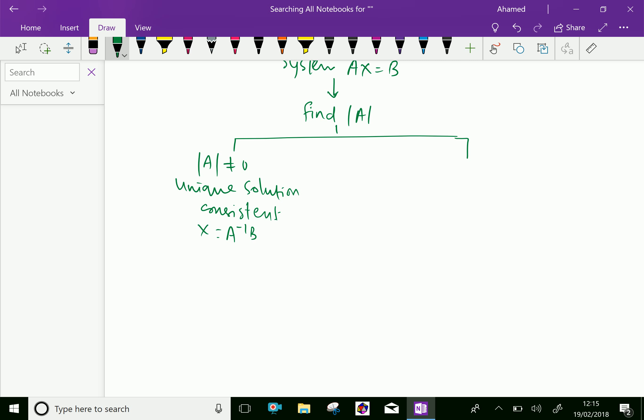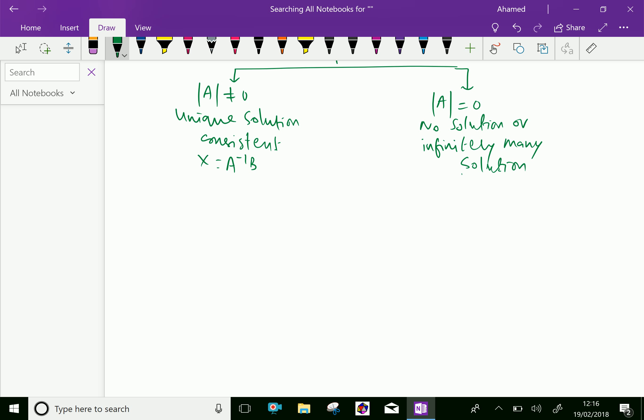The second case: determinant value is equal to zero. Therefore, we can say there is no solution or infinitely many solutions. The system has no solution or infinitely many solutions. This has two conditions.